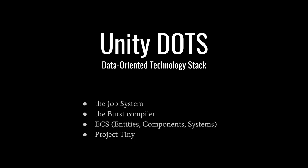DOTS is comprised of these four elements. The job system enables us to utilize multiple cores by creating units of work called jobs, and the Burst compiler, optionally, can be used to compile the code of these jobs, generating highly optimized code.